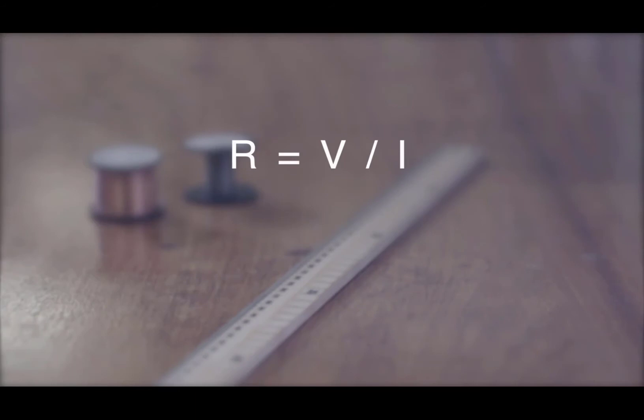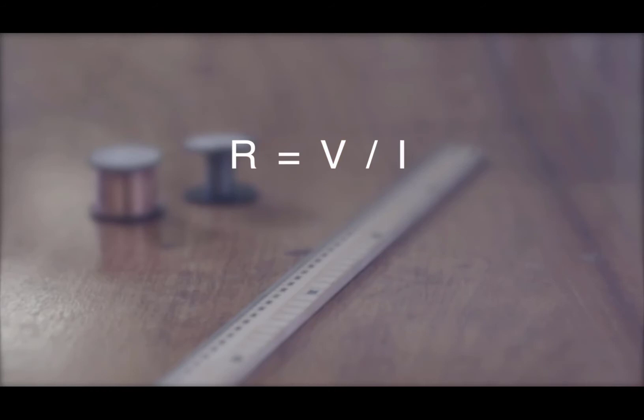The resistance of each length of wire can be calculated using this equation. Resistance R equals the potential difference V divided by the current I. The results table is completed using the calculated resistance for each length of wire.